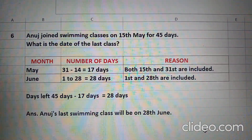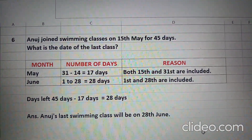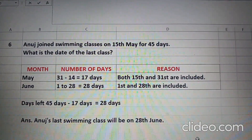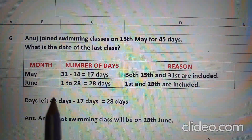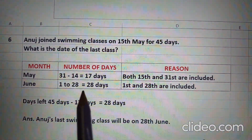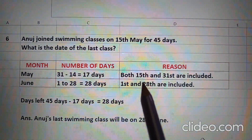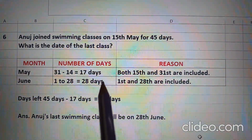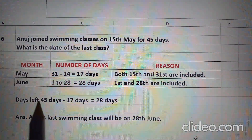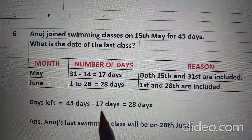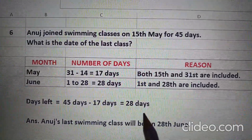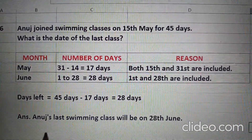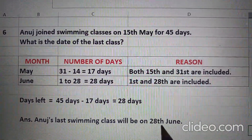Question 6: Anuj joined swimming classes on 15th May for 45 days. What is the date of the last class? Children, aapko last class ka date find out karna hai. In May there are 31 days; we subtract 14 because the first class was on 15th May. So 31 minus 14 that comes to 17 days. Total days were 45, so 45 minus 17 that comes to 28 days remaining. So 1 to 28 equal to 28 days — we are including 28th also. Therefore, Anuj's last swimming class will be on 28th June.